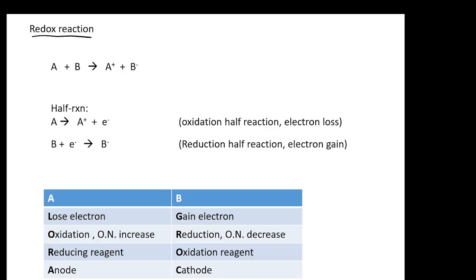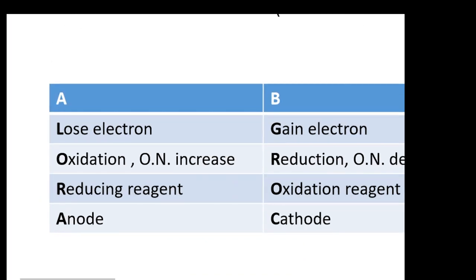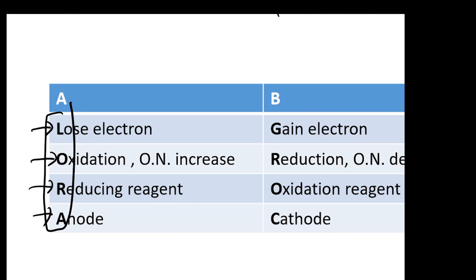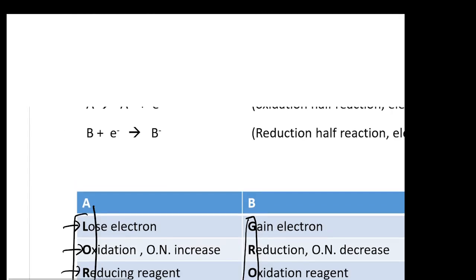Redox reactions — this is actually reduction-oxidation reaction, and they always come together. Just a quick reminder: if you lost electrons, you undergo oxidation and can serve as a reducing agent, which will always happen at the anode in an electrochemical cell. LoRa means the oxidation reaction, GROC means the reduction reaction — just a refresh of your memory. We're going to use LoRa and GROC here.